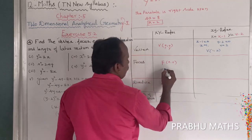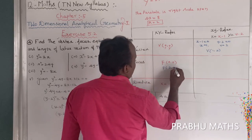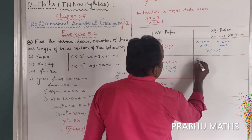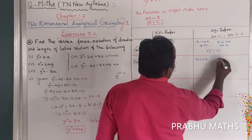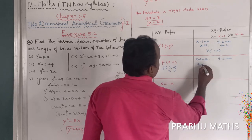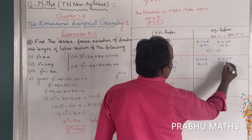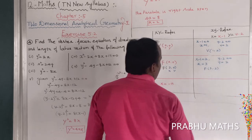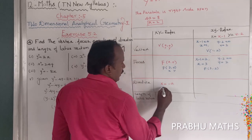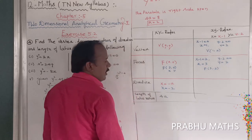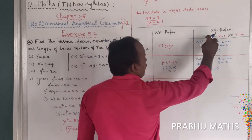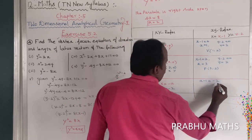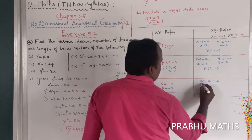For the focus in the shifted system, F is at (a, 0) = (2, 0). Substituting back: x minus 1 equals 2 gives x equals 3, and y minus 2 equals 0 gives y equals 2. So the focus is (3, 2). For the directrix, x-bar equals minus a = minus 2, so x minus 1 equals minus 2, giving x equals minus 1.